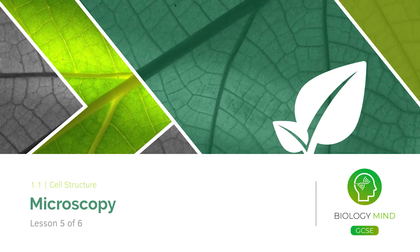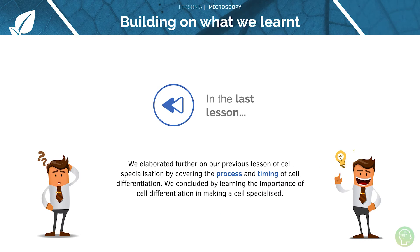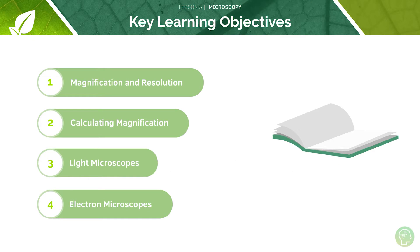Welcome to tutorial five of six on microscopy. In our last lesson we focused on looking at the process and timing of cell differentiation, so if you're still unsure about that topic then perhaps go back and watch that before proceeding. These are our key learning objectives for today — we'll cover these one by one, and remember you can pause the video at any point and rewind and replay for any bits you don't quite get the first time.